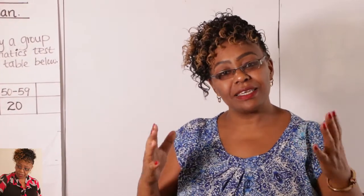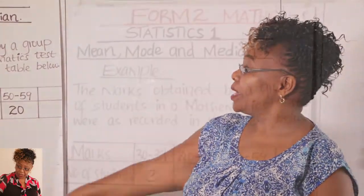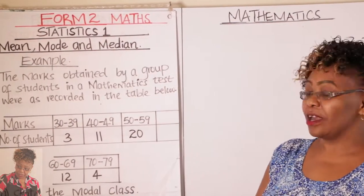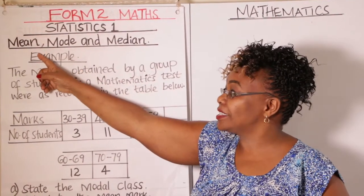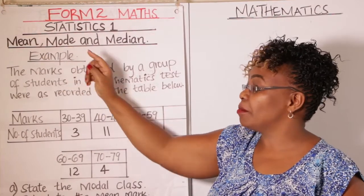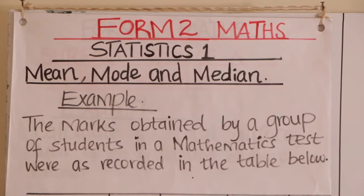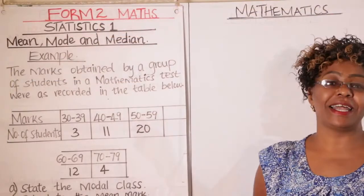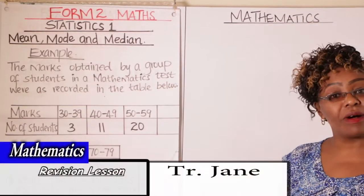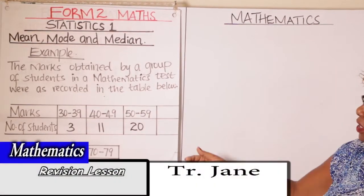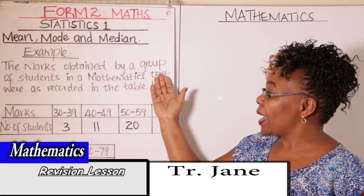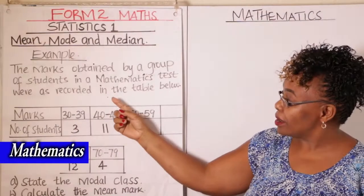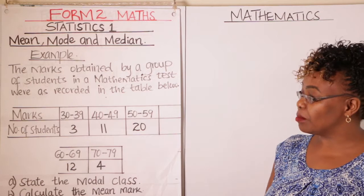Welcome to my mathematics class. Today we are going to look at Form 2 mathematics. Our topic is Statistics 1. We are going to learn how to calculate the mean, how to find the mode, and how to calculate the median over grouped data. So we go straight away to our first question: the marks obtained by a group of students in a mathematics test were recorded in the table below.